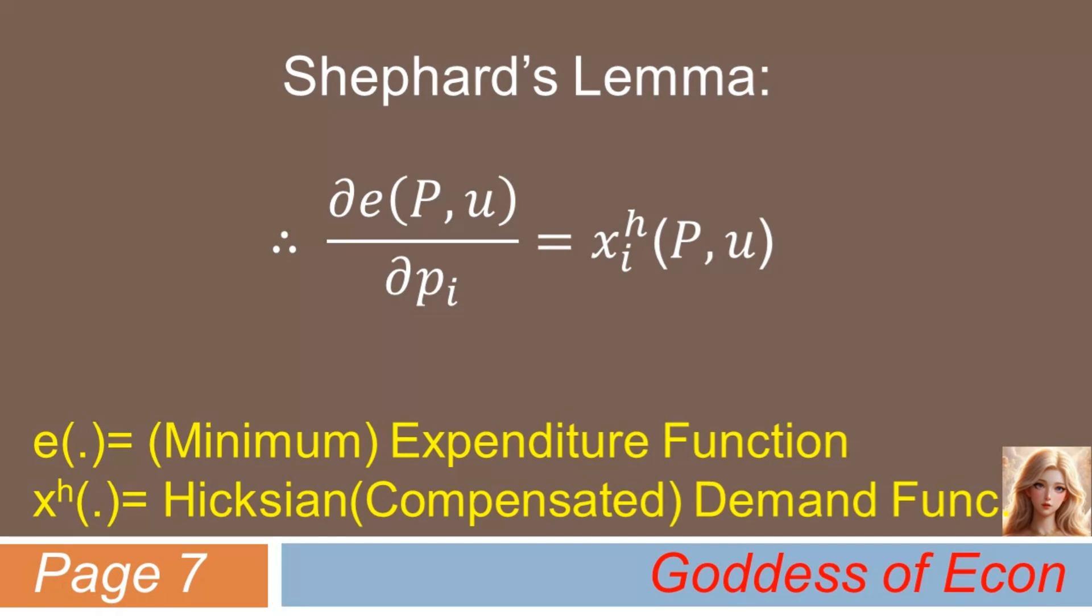Here, the capital P represents the vector of goods prices. Now, we have reached an end of our journey. The proof was not so difficult, was it?